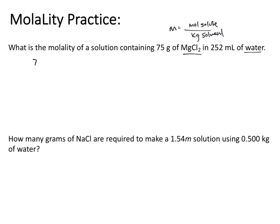We'll take our 75 grams of MgCl2 and convert to moles using 95.211 grams of MgCl2 per one mole. That gives us 0.78772 moles of MgCl2.